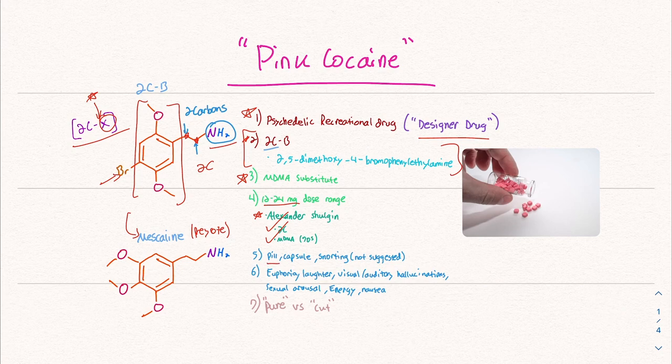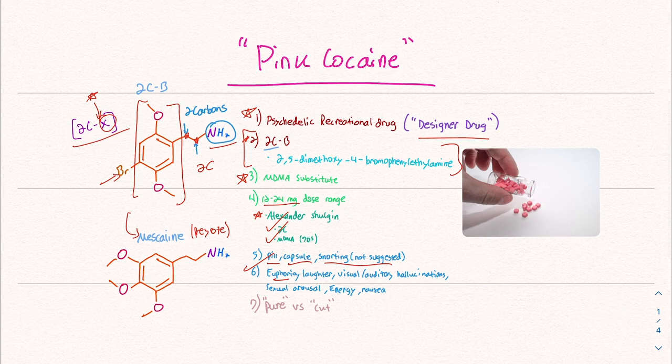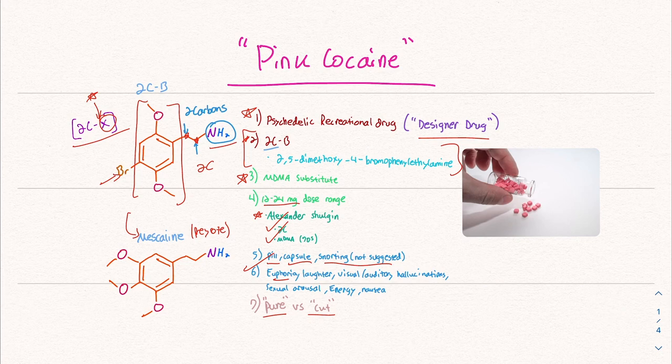2C-B is present in pills, capsules, it can be snorted, not really suggested because of the side effects, and it produces euphoria, laughter, visual and auditory hallucinations, enhanced sexual arousal, energy, nausea, and a whole bunch of other things. As I've mentioned before in my other videos, and I'll probably keep mentioning this as I talk about recreational drugs, is pure versus cut. Most likely, if you get 2C-B on the street, it's probably not pure. There's probably other stuff in there. These days, you don't know what's in there, and you're kind of taking a risk. As I always say, live your life, do what you do, but be aware that these designer drugs are often cut with all sorts of stuff, and therefore should be taken with caution.